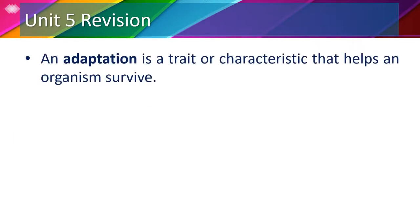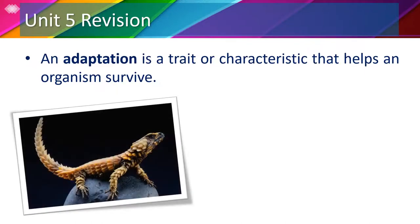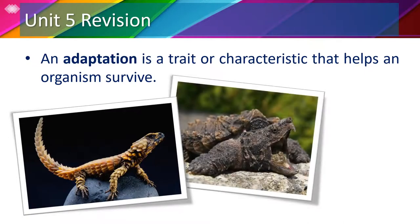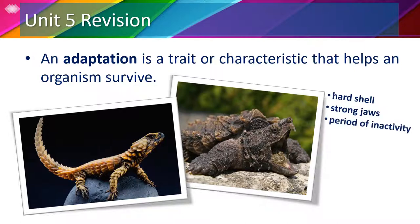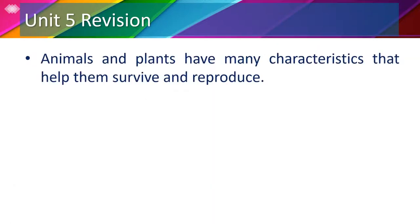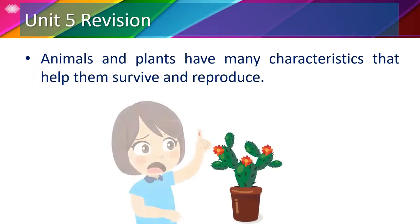Adaptation is a trait or characteristic that helps an organism survive. For example, the armadillo lizard and the alligator snapping turtle both have a hard shell and a strong jaw, and they can both stay inactive for a long period of time to save energy when there's no food available. Animals and plants have many characteristics that help them survive and reproduce. Like this cactus plant — it protects itself from being eaten by its spines or thorns.